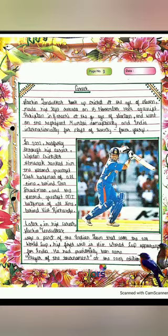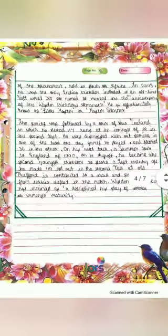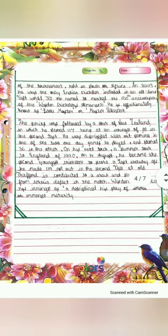Later in his career, Sachin Tendulkar was a part of the Indian team that won the 2011 World Cup — his first win in six World Cup appearances for India. He had previously been named player of the tournament at the 2003 edition held in South Africa. In 2013, he was the only Indian cricketer included in an all-time Test World XI named to mark the 150th anniversary of Wisden, affectionately known as the Little Master or Master Blaster.